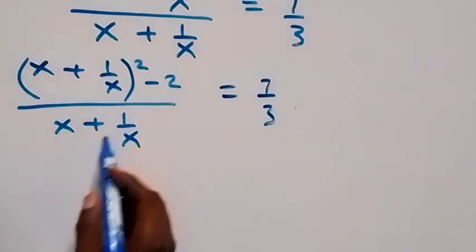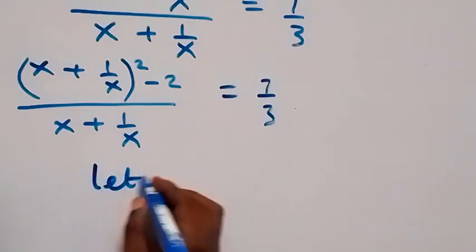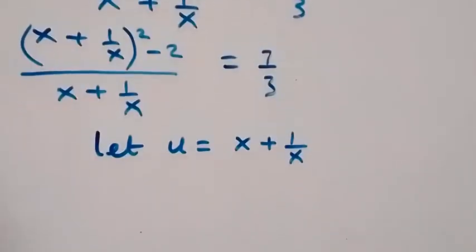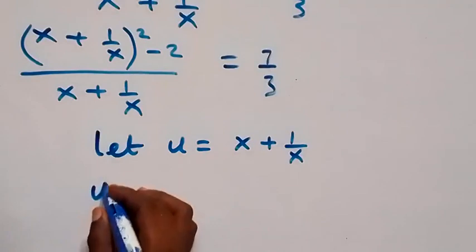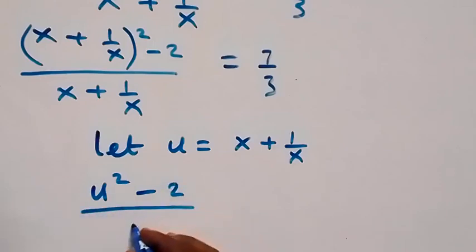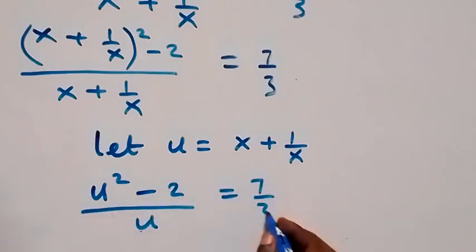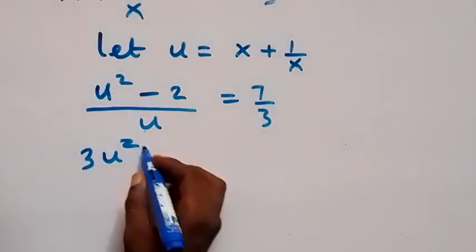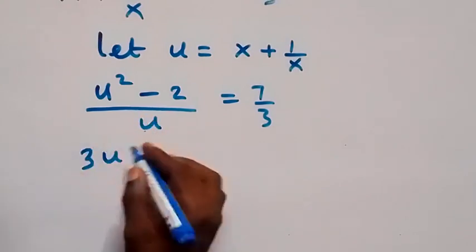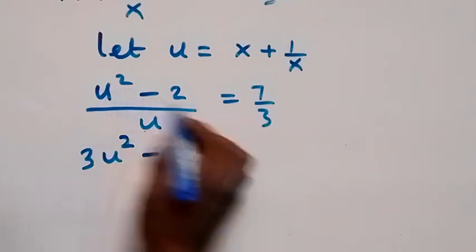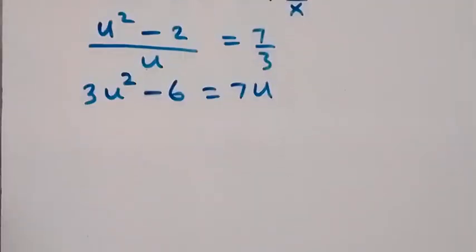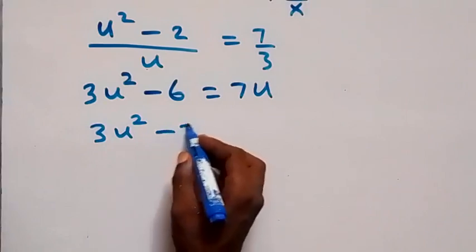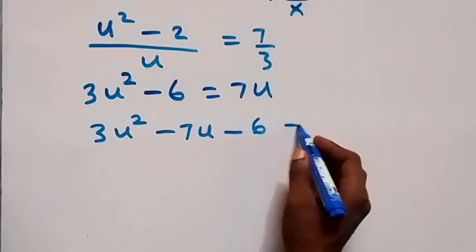Since we have x plus 1 over x appearing repeatedly, let's use a letter for that. Let u equal x plus 1 over x. Then we can write the equation as u squared minus 2 over u equals 7 over 3. Cross multiplying gives us 3u squared minus 6 equals 7u. Taking 7u to the other side gives us 3u squared minus 7u minus 6 equals 0.